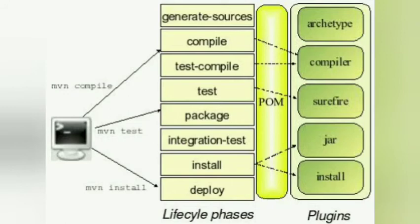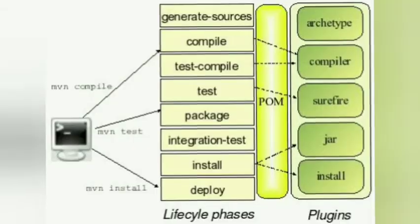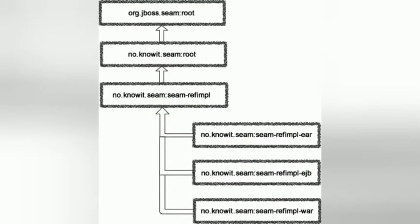5. Build plugins. Build plugins are used to perform specific goals. You can add a plugin to the POM file. Maven has some standard plugins you can use, and you can also implement your own in Java.